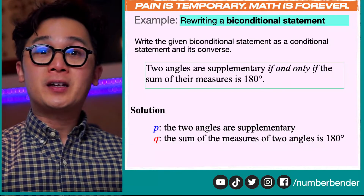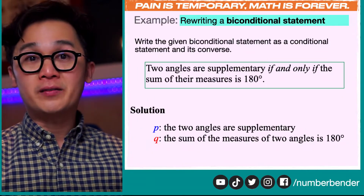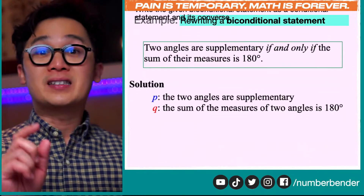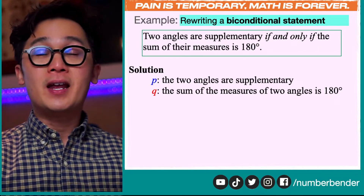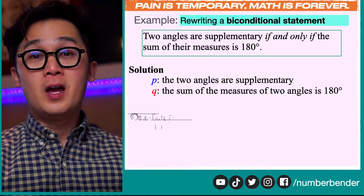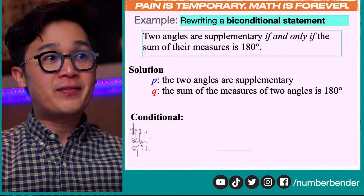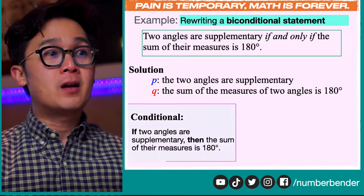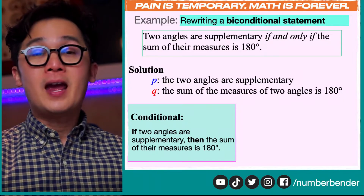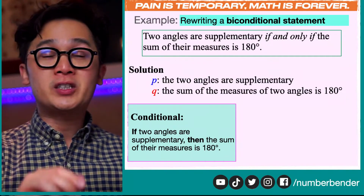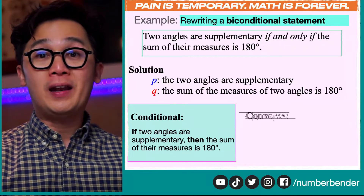In this particular example, 'two angles are supplementary' would be our P, and 'the sum of the measures of two angles is 180 degrees' would be our Q. The task is to write the conditional and its converse. The conditional statement is given by P then Q, so: if the two angles are supplementary, then the sum of the measures of two angles is 180 degrees. We can easily form its converse by switching P and Q, so Q becomes P and P becomes Q.